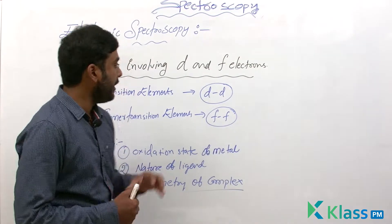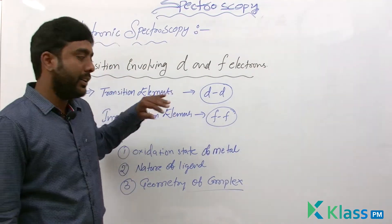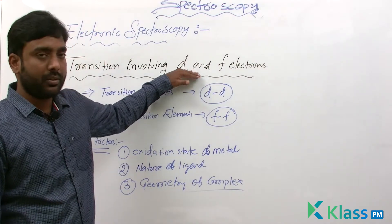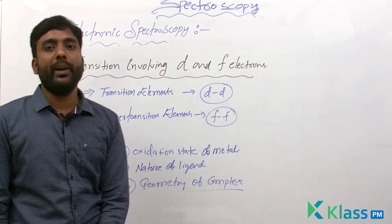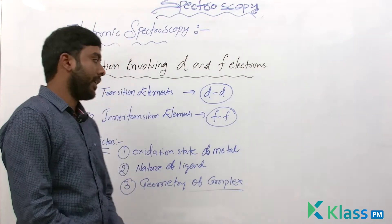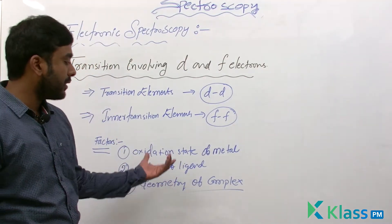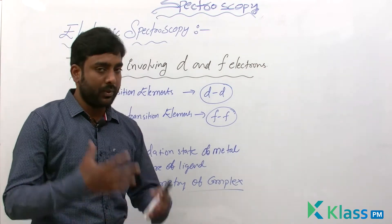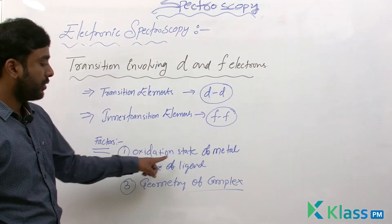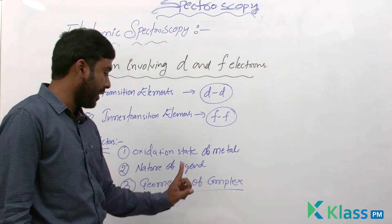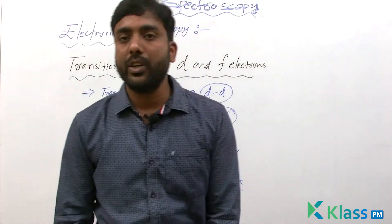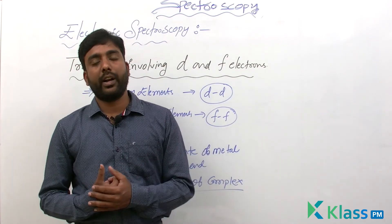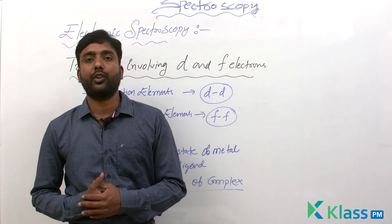In overall summary: in d-block elements we see the involvement of d electrons, and in f-block elements we see the involvement of f electrons. The three factors influencing the energy states are the oxidation state of the metal, the nature of the ligand, and the geometry of the complex. This is how the different types of transitions are seen in electronic spectra.